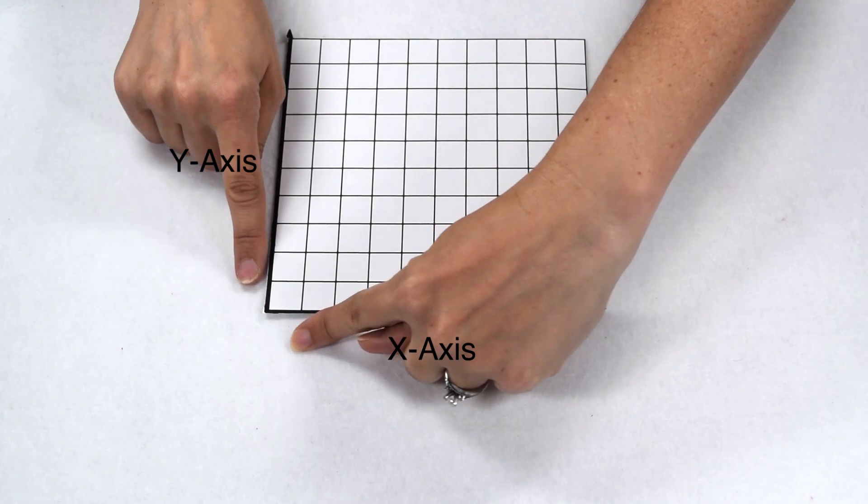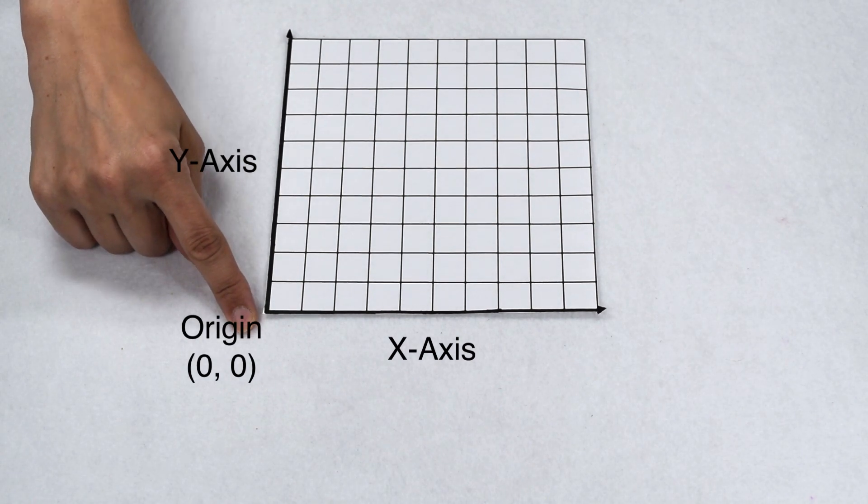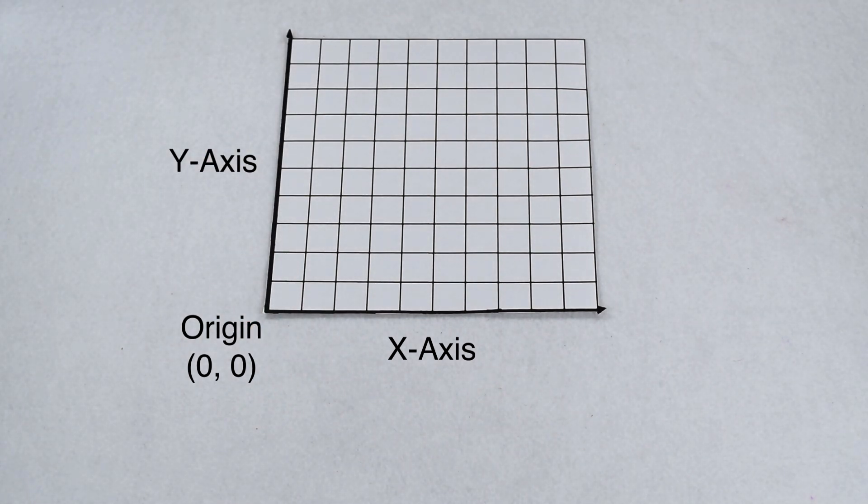Our x and y axis should be perpendicular to each other, meaning they intersect at a 90 degree angle. The point they intersect at is called the origin. The origin is located at (0, 0). All other points on the graph are measured from the origin.